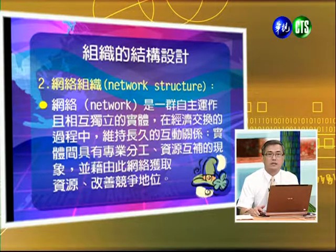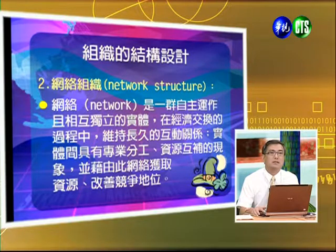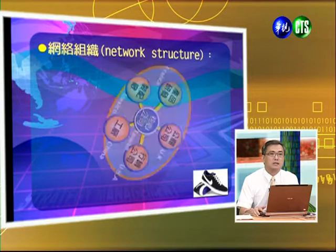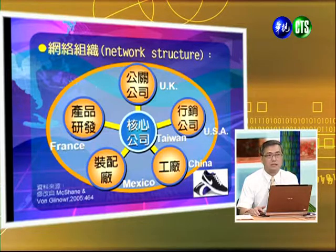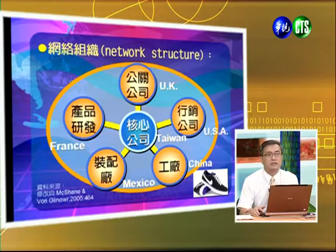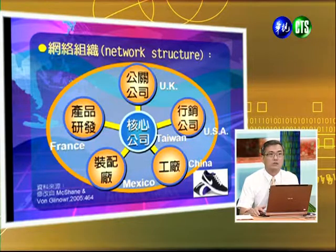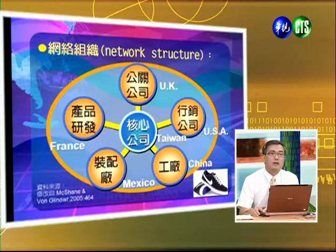網絡是有目的的連結，使得網絡內部成員相較於外部成員可以擁有競爭上的優勢。網絡是一種自主性且相互獨立的實體，在經濟交換中可以維持長久的互動關係，實體間具有專業分工，資源可以互相彌補。網絡組織就像一個圖形，中間是核心公司，可以跟公關公司、產品研發、裝備廠、工廠、行銷公司整合在一起，這就是網絡的組織結構圖。